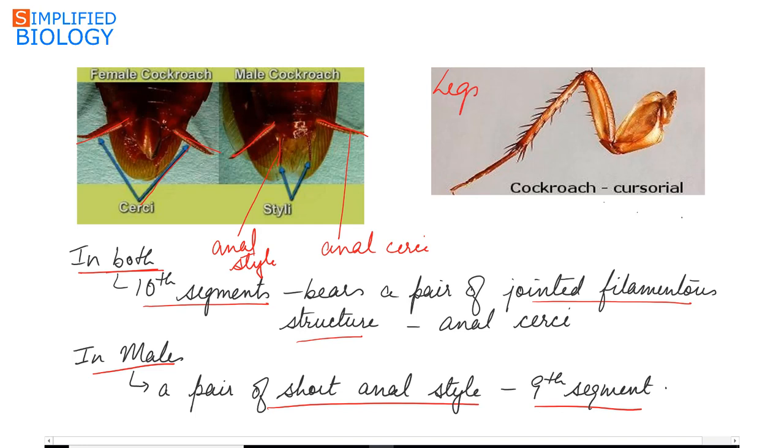Legs of a cockroach can be divided into five parts: coxa, the thigh-like structure coxa, this is your trochanter, femur, tibia, and the fifth one is tarsus. So the leg of the cockroach has five parts: coxa, the smaller trochanter, femur, tibia, and tarsus.